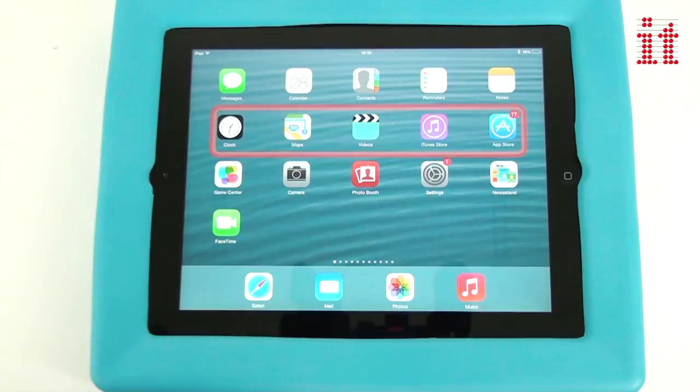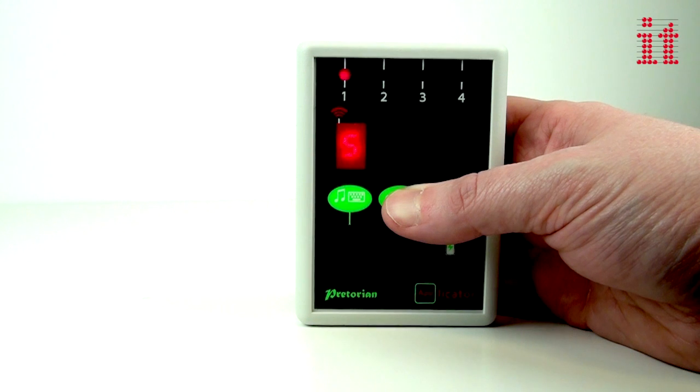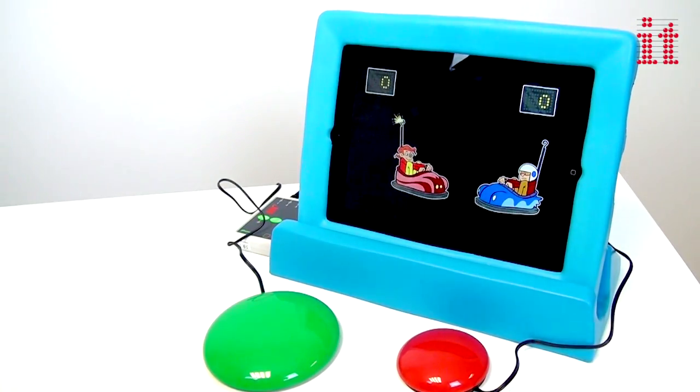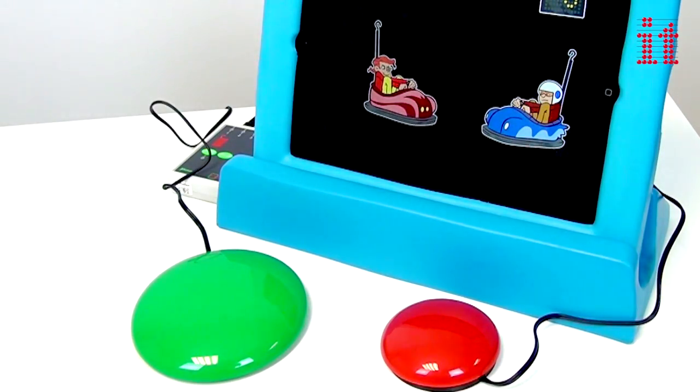Applicator is simple to set up and easy to use. To work with switch-accessible apps, ports 1 and 2 on the interface emulate spacebar and enter key, so they work with apps designed to use those keystrokes.